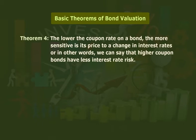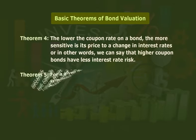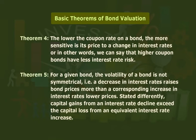Theorem four: the lower the coupon rate on a bond, the more sensitive is its price to a change in interest rates. In other words, the higher the coupon rate, the lesser the interest rate risk. Theorem five: for a given bond, its volatility is not symmetrical — a decrease in interest rates raises bond prices more than a corresponding increase in interest rates lowers them.